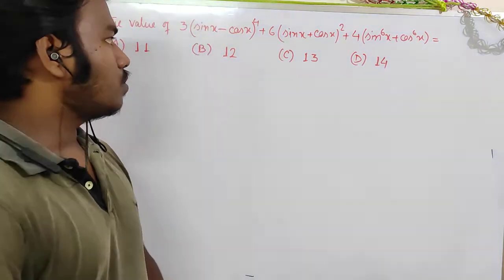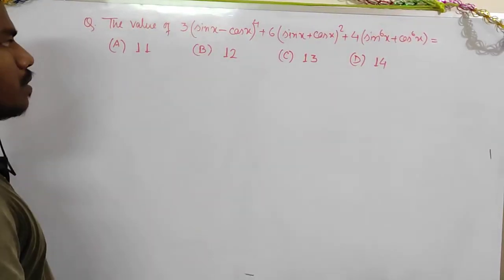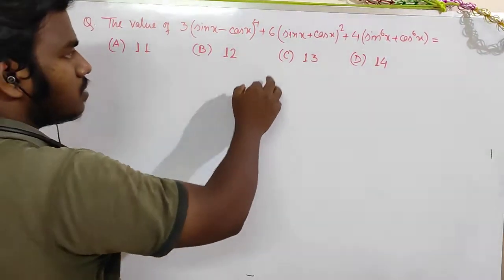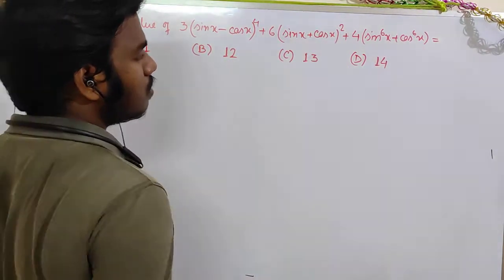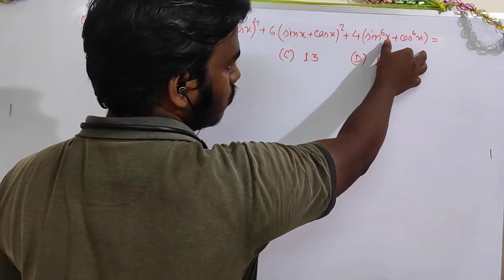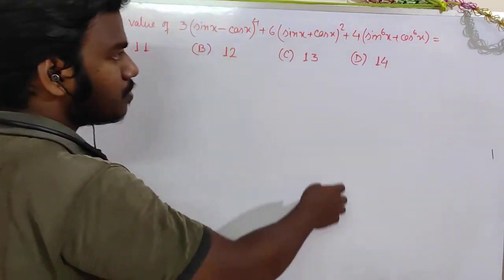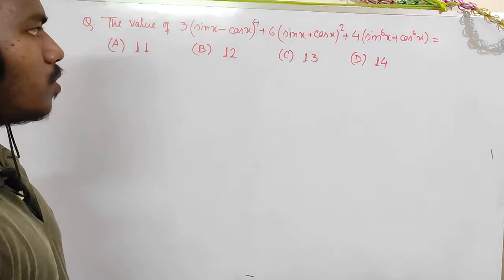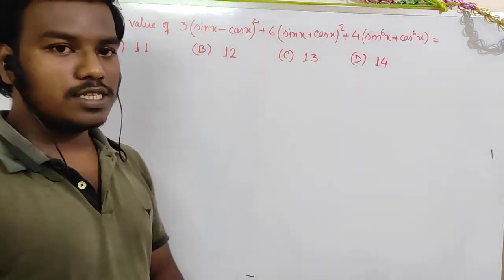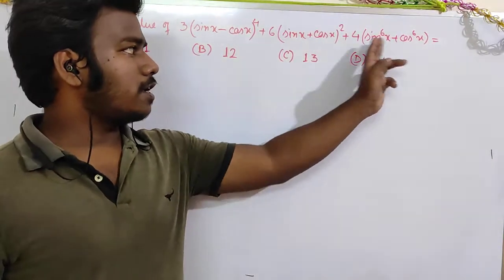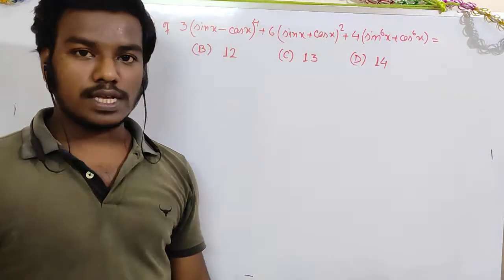Hello everyone. So, if the value of 3 into sin x minus cos x to the power 4, plus 6 into sin x plus cos x to the power 4, plus 6 into sin x plus cos x to the power 6, equals alpha — the problem asks us to prove that this expression is independent of x.